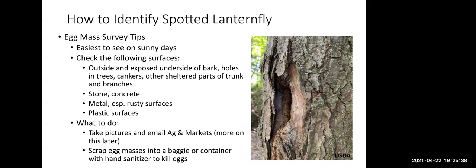Some survey tips if you're out looking for egg masses: they're much easier to see on sunny days than overcast days. Good places to look are on the outside of bark as well as exposed undersides of bark. They tend to like sheltered areas — cankers and holes in trees are great places to look. They also like stone, concrete, rusty metal, and plastic surfaces like playgrounds and outdoor plastic equipment. If you find an egg mass, take pictures and email egg markets — we'll give you the specifics on that later. Then scrape the egg masses into a bag or container with some hand sanitizer to kill the eggs.